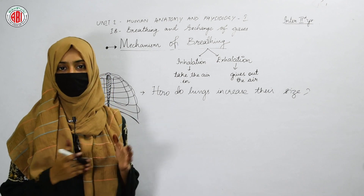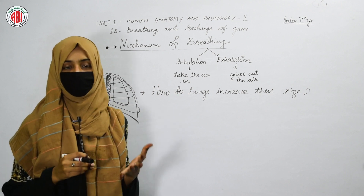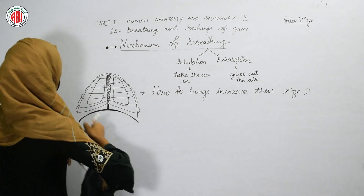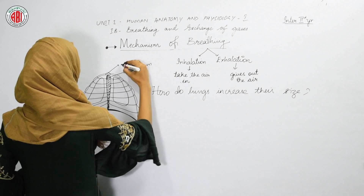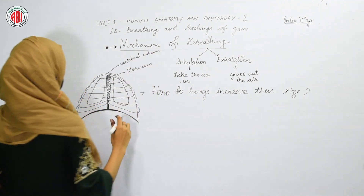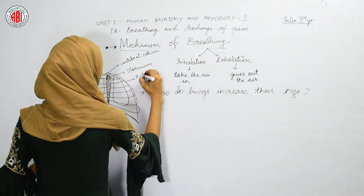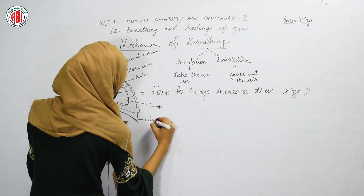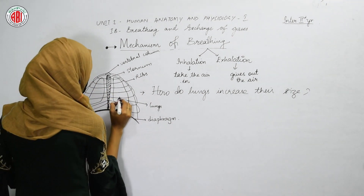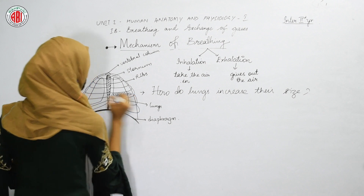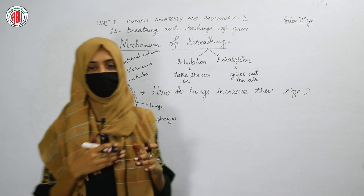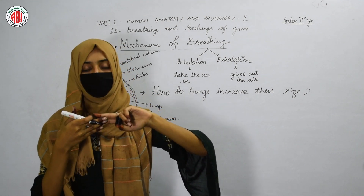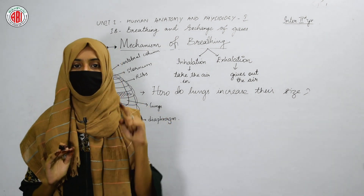Intercostal muscles are present in between the two ribs. If they are located externally, they are called external intercostal muscles; if located internally, they are called internal intercostal muscles. When the external intercostal muscles contract, the thoracic chamber expands and the ribs move upwards. When they move upward, the thoracic chamber expands, and as soon as the thoracic chamber expands, the lungs also expand. When the size of the lungs increases, the air pressure decreases.